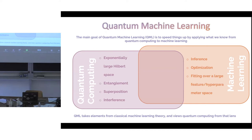Quantum machine learning lies at the intersection of quantum computing and machine learning, combining the best of both worlds. From quantum computing, we harness quantum mechanical properties of matter such as entanglement and superposition for information processing purposes. From machine learning, we leverage a large mathematical framework that allows us to perform inference, optimization, and the use of neural networks to fit functions over a large hyperparameter or feature space.